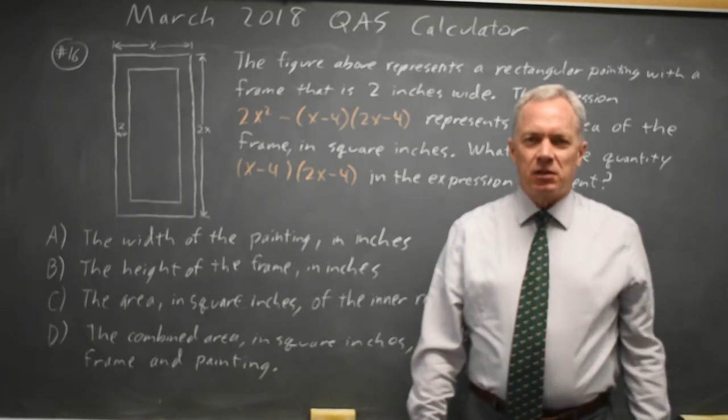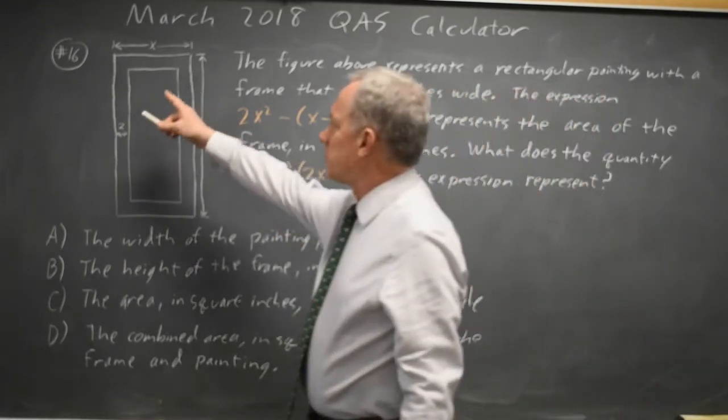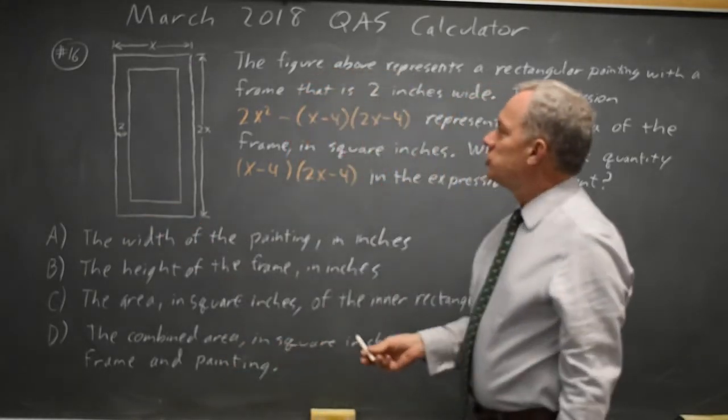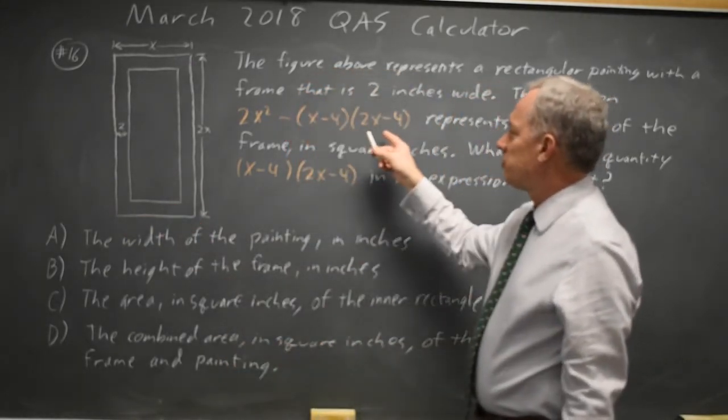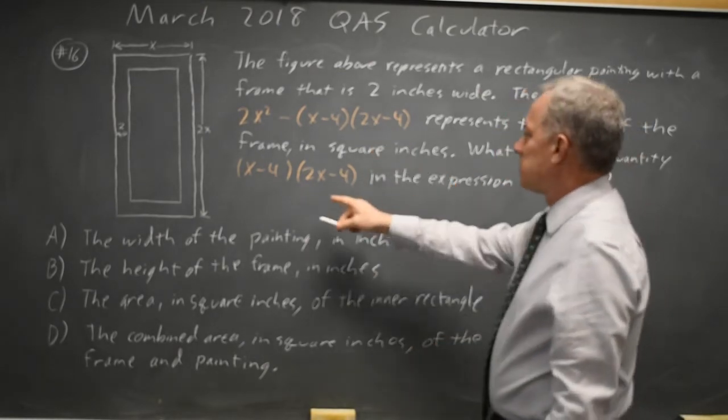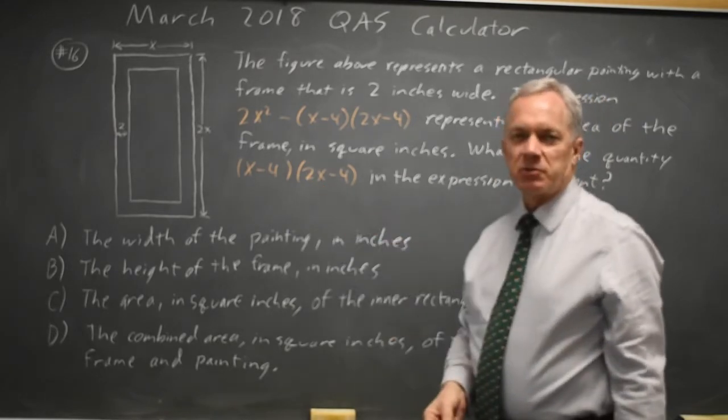This is question 16. College Board gives us a diagram of a frame with a picture where 2x² minus (x-4)(2x-4) represents the area of the frame and asks what (x-4)(2x-4) represents.